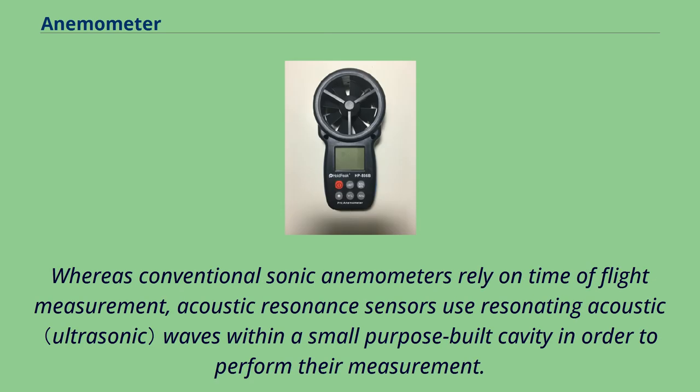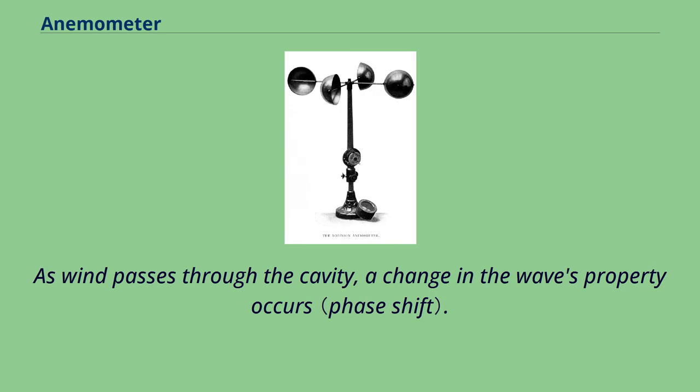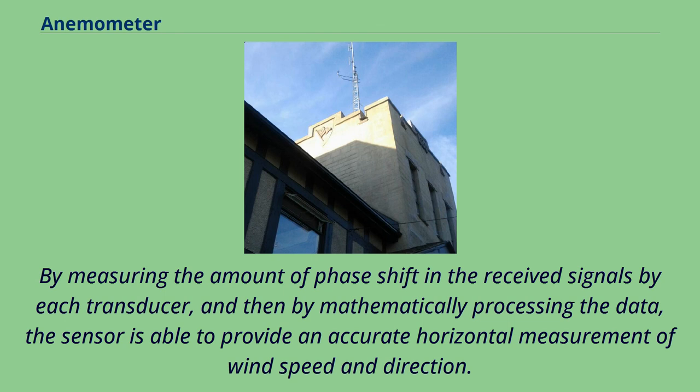Whereas conventional sonic anemometers rely on time of flight measurement, acoustic resonance sensors use resonating acoustic waves within a small purpose-built cavity in order to perform their measurement. Built into the cavity is an array of ultrasonic transducers, which are used to create the separate standing wave patterns at ultrasonic frequencies. As wind passes through the cavity, a change in the wave's property occurs. By measuring the amount of phase shift in the received signals by each transducer, and then by mathematically processing the data, the sensor is able to provide an accurate horizontal measurement of wind speed and direction.